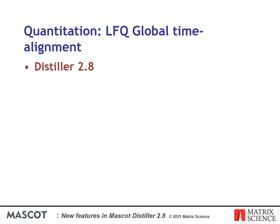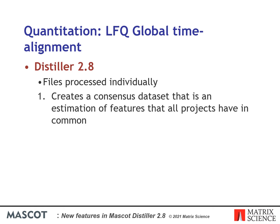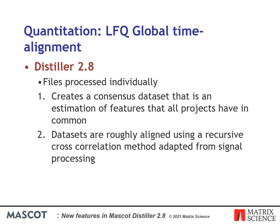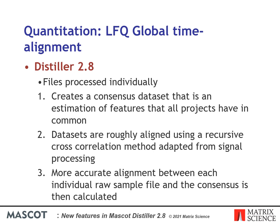In Mascot Distiller 2.8, the raw sample files can be processed individually and a memory-efficient multi-file project created, which reduces the memory overhead. When it carries out replicate quantitation, the first step is to perform global time alignment between the files. This is then used to locate the regions to look for XICs for any identified peptides missing from a particular file. First, a consensus dataset is created which is an estimation of features that all projects have in common. The individual datasets are then roughly aligned to the consensus, and finally a more accurate alignment between each individual raw sample file and the consensus is calculated.